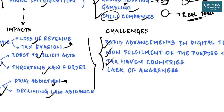Tax haven countries have long been associated with money laundering because their strict financial secrecy laws allow creation of anonymous accounts while prohibiting disclosure of financial information. Finally, lack of awareness about the seriousness of money laundering is a challenge: poor and illiterate people prefer the hawala system — with fewer formalities, little documentation, lower rates, and anonymity — over lengthy paperwork-based banking transactions.